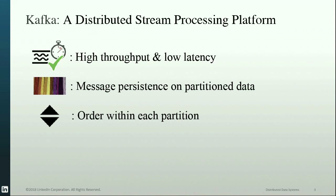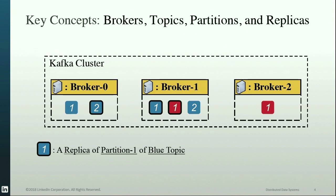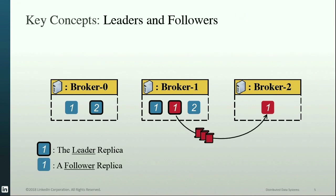Before I delve into the details of Cruise Control, to make sure we're all on the same page, I'd like to go over a number of key Kafka concepts. Kafka runs on a cluster of brokers. The data is partitioned within topics and distributed over these brokers. Each partition consists of a number of replicas — for example, the blue box here represents a replica of partition one from the blue topic.